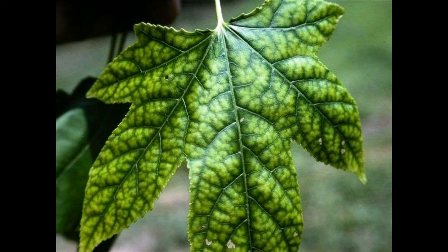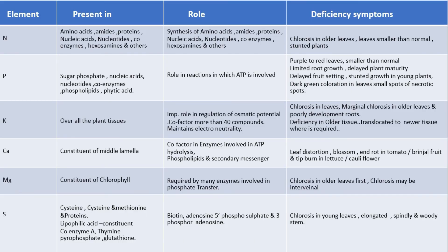Sulfur is present in cysteine, methionine, and other proteins. Lipoic acid is a constituent of sulfur. It is also present in coenzyme A, thiamine pyrophosphate, and glutathione. The function of sulfur includes its presence in biotin, adenosine 5'-phosphosulfate, and 3'-phosphoadenosine.